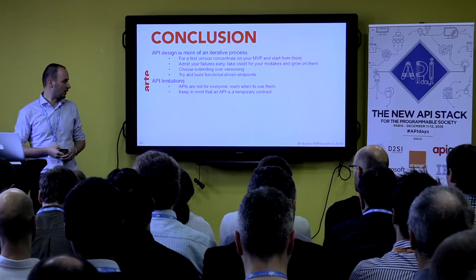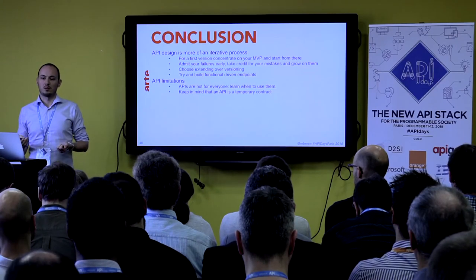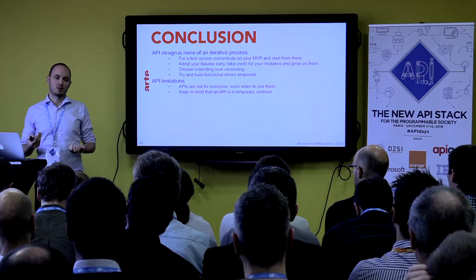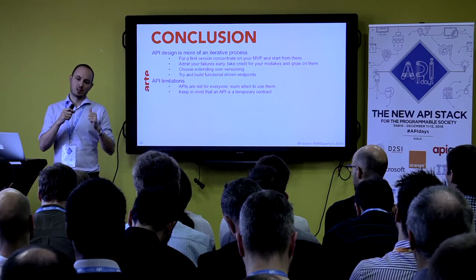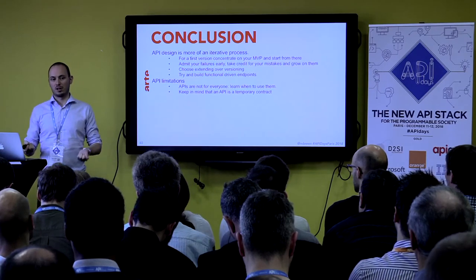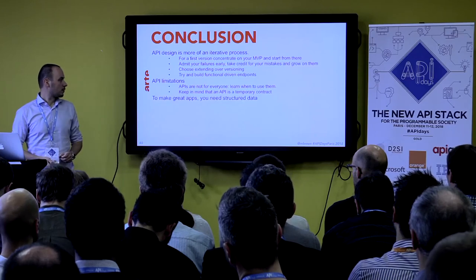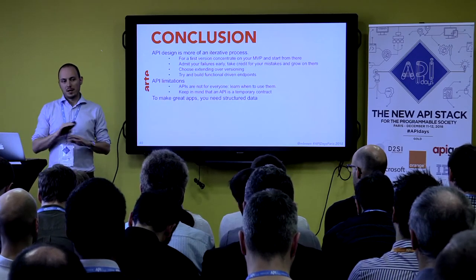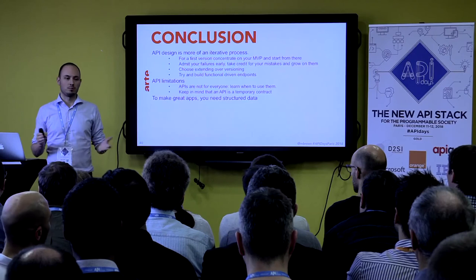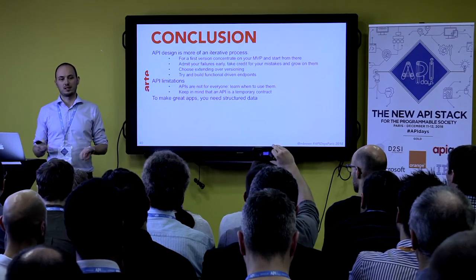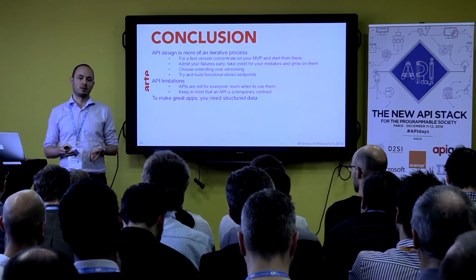Keep in mind that an API is a temporary contract. For example, our API lifecycle is about three years. You have to take this into account, because if you're sharing your API with partners and they expect their app to work for five years, then you have a big problem — so consider this very early. You can build the best API in the world, but if your data is not good and not structured properly, you will not make a great app. Maybe it's best to take time to work on your data and the structure of your data before working on the API itself.